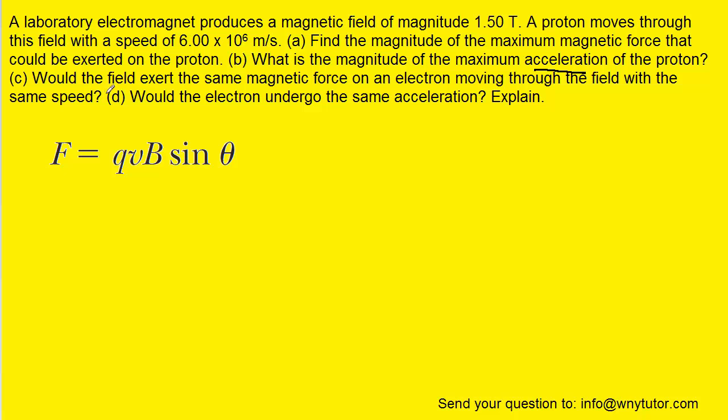Now to solve part C and determine whether the field exerts the same magnetic force on an electron, we have to just go back and look at the equation that we use to calculate the magnetic force. Now the question notes that the electron would be moving with the same speed, so the V would have the same value. The magnetic field strength is also not changing.